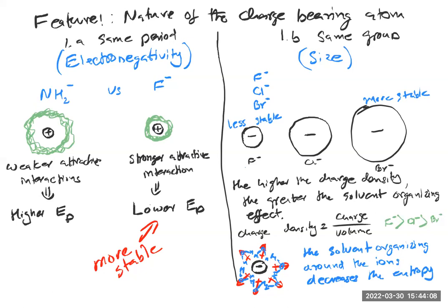So this summarizes Feature 1 — the stability of anions when they are in the same period versus when they are in the same group. For the same period, electronegativity governs stability. For the same group, size and charge density govern stability through an entropic effect. I'll see you guys in class — bye everybody.